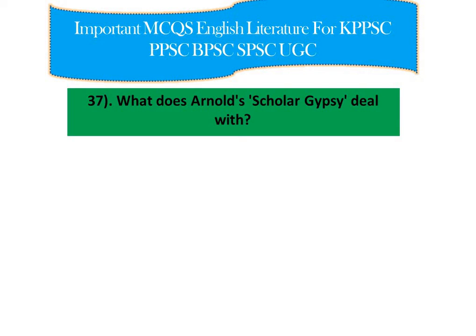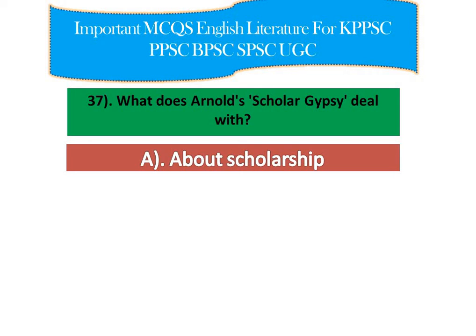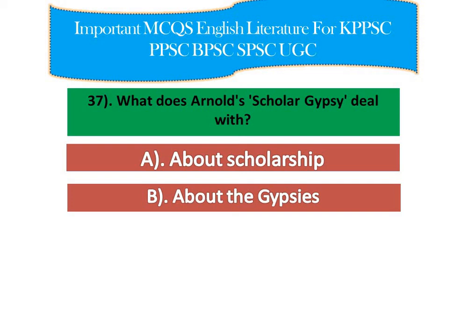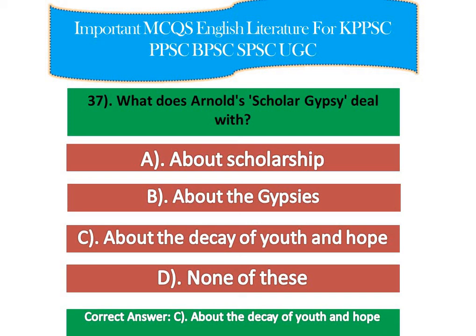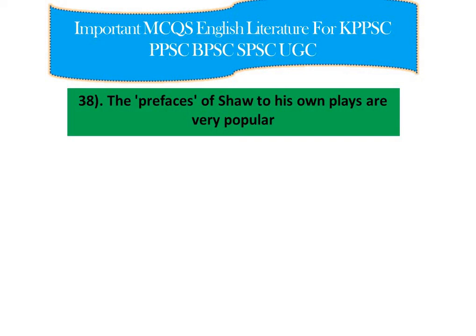Question number 12: What does Arnold's 'Scholar Gypsy' deal with? Option A: it is about scholarship, option B: it is about gypsies, option C: it is about the decay of youth and hope, option D: none of these. The right answer is option C — about the decay of youth and hope. This poem deals with a legendary Oxford scholar who gives up his academic life to roam the world with a band of gypsies, observing their customs.